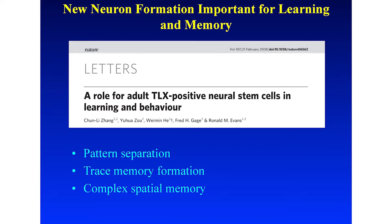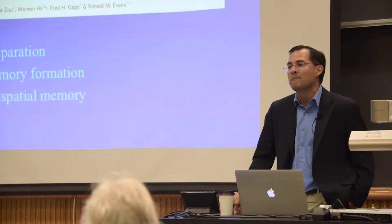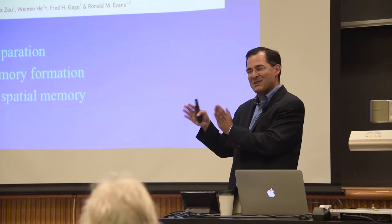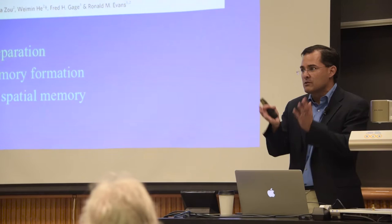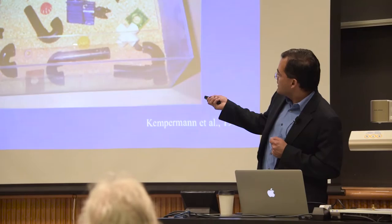One such task is pattern separation — your ability to distinguish between multiple copies of memories that are almost identical. The analogy I use: I park at Berkeley in the Upper Hearst lot in the exact same spot every day because I have lousy pattern separation and wouldn't remember where my car was if I parked in a different place. Pattern separation is the ability to remember and distinguish between many different but similar copies of the same experience. Complex spatial memory, for example, is the ability to navigate San Francisco. Neurogenesis is not something fixed and hardwired — it's modulated by experiences and decisions that we make.